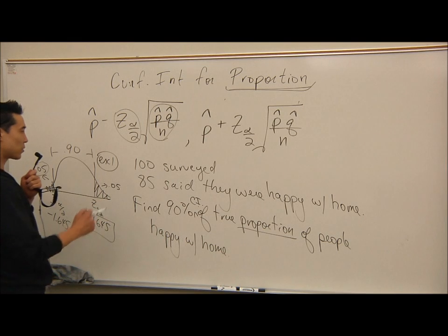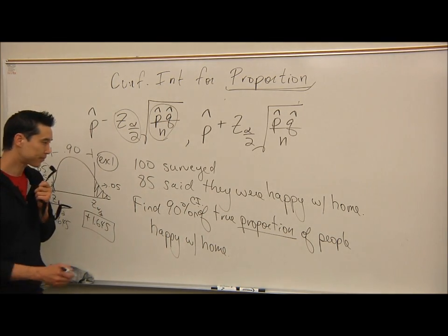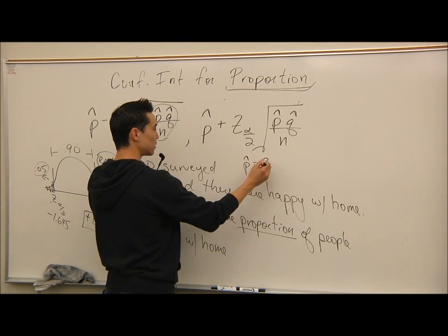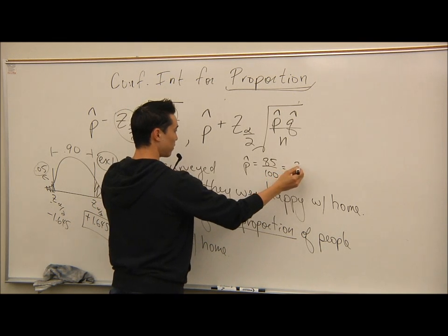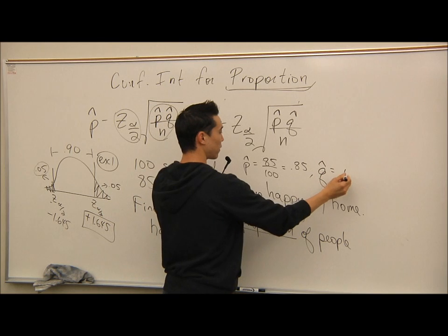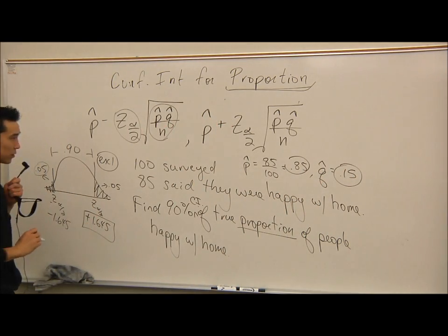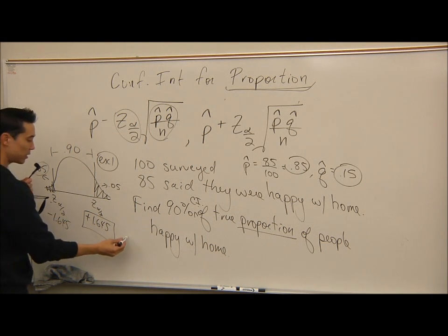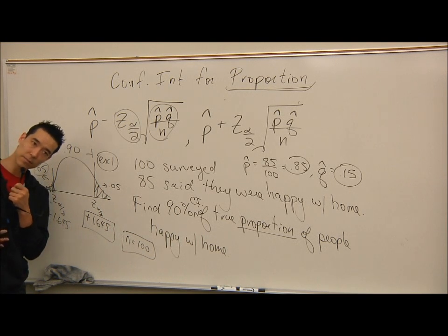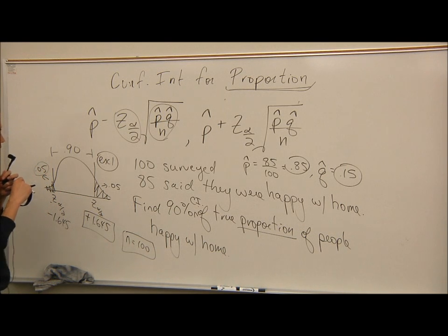In this problem, what is P hat going to be? 100 people, 85 were happy with their home. So P hat is 0.85, 85 out of 100. Q hat, therefore, is 0.15. We have P hat, Q hat, Z sub alpha over 2, and N is 100. You have all the values that you need to solve this problem. Go ahead and plug those values into your confidence interval, and let's get the answers.